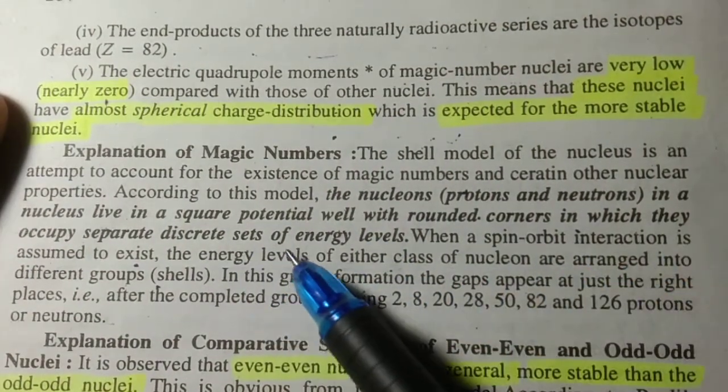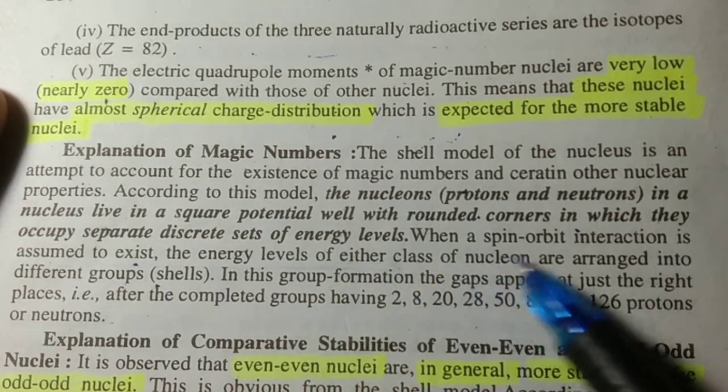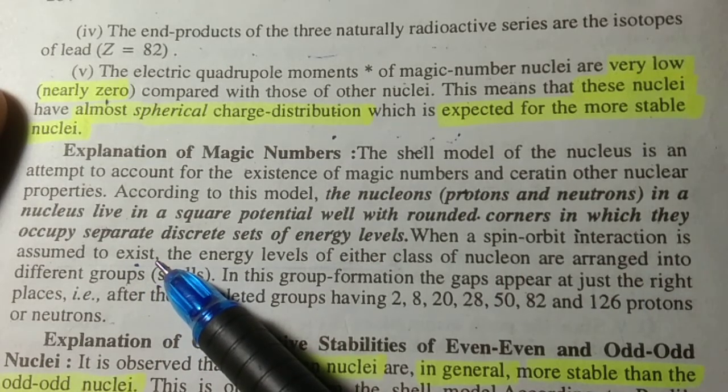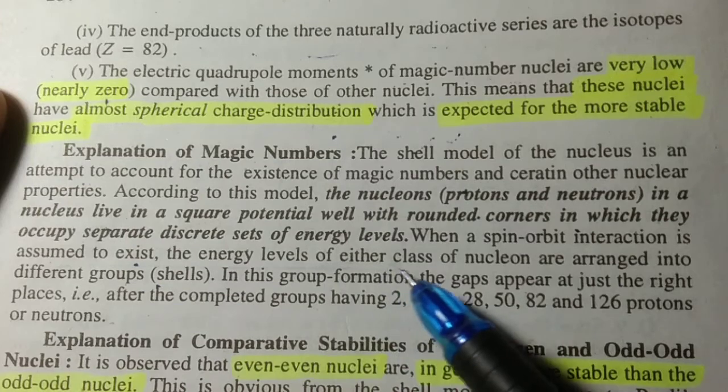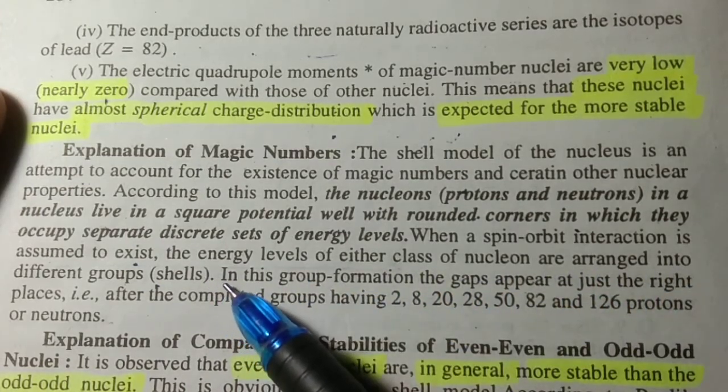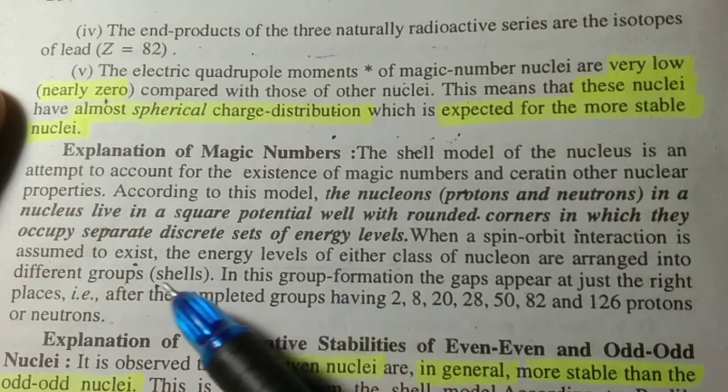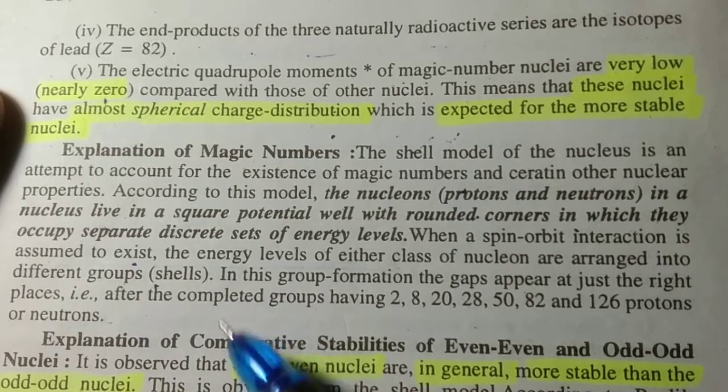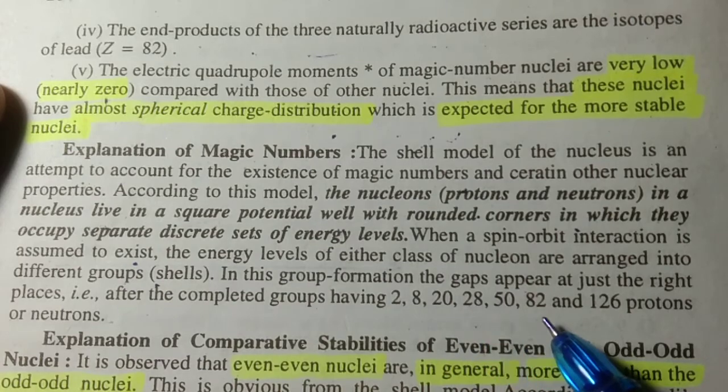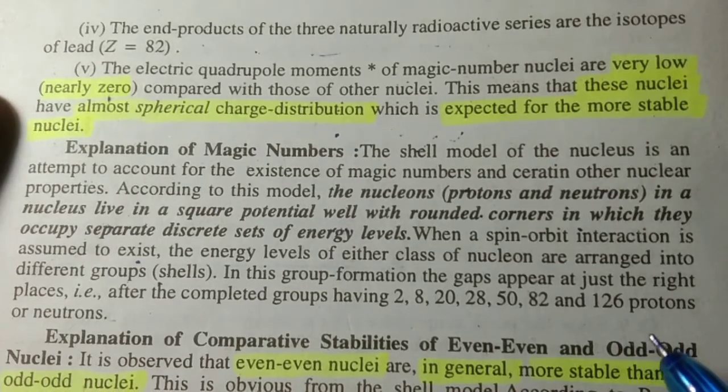When a spin-orbit interaction is assumed to exist, the energy levels of either class of nucleons are arranged into different groups or shells. In this group formation, the gaps appear at just the right places, that is, after the completed groups having 2, 8, 20, 28, 50, 82, and 126 protons or neutrons—the magic numbers.